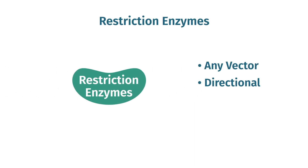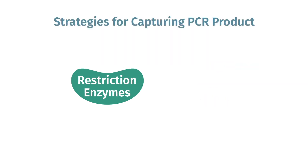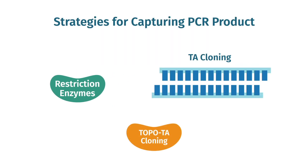While this method is versatile, it is relatively time consuming compared to the popular alternatives TA and topo cloning. Both of these techniques allow you to clone your PCR product directly with minimal additional steps. While dedicated vectors are not unlimited, there are many topo and TA vectors to choose from, and several allow you to progress very quickly to the next phase of your experiment.